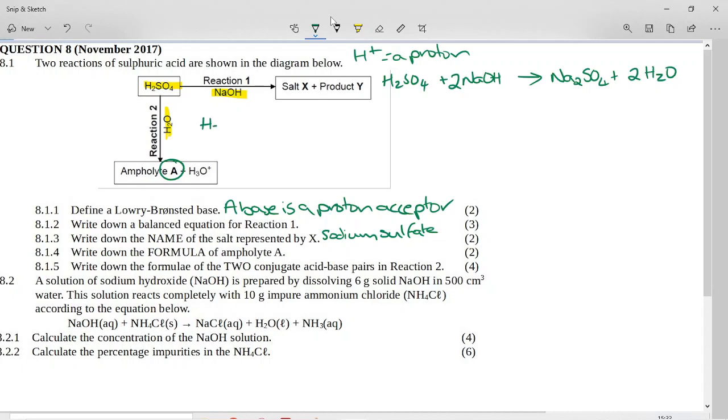So if we have a look at this reaction, we had sulfuric acid plus water. And then they said, we are going to end up with ampholyte A and a hydronium ion. So all you have to do is atoms on the left, atoms on the right.